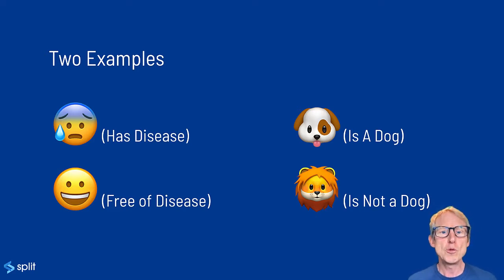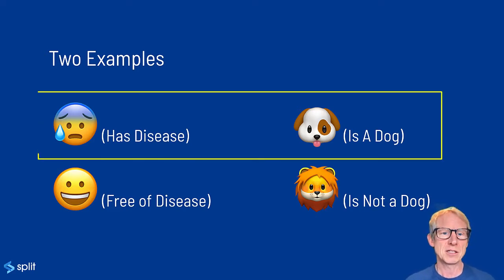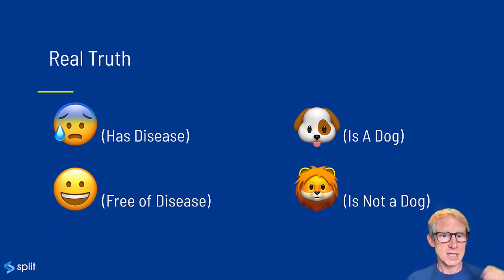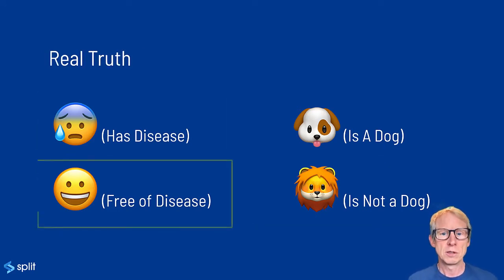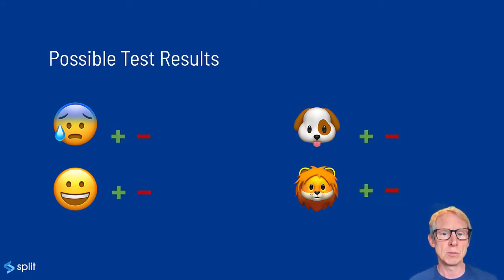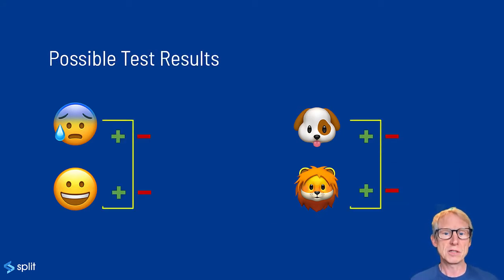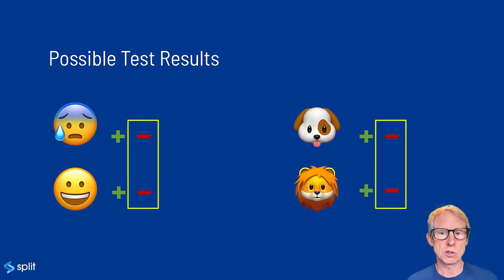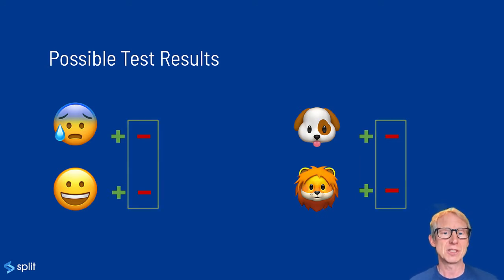Either way, there are two possible real-life truths. Either the thing being tested for is true or it isn't — the person is sick or they aren't, the image is a dog or it isn't. There are also two possible test outcomes: a positive test result, where the test predicts the person is sick or the image is a dog, and a negative test result, where the test predicts that a person is not sick or the image is not a dog.